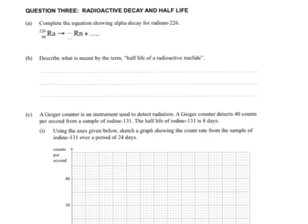So we've got radioactive decay and half-life, and part A is complete the equation showing alpha decay for radium-226. So what we know with these equations of radioactive decay, there are conservation laws. There's conservation of mass number, conservation of atomic number.